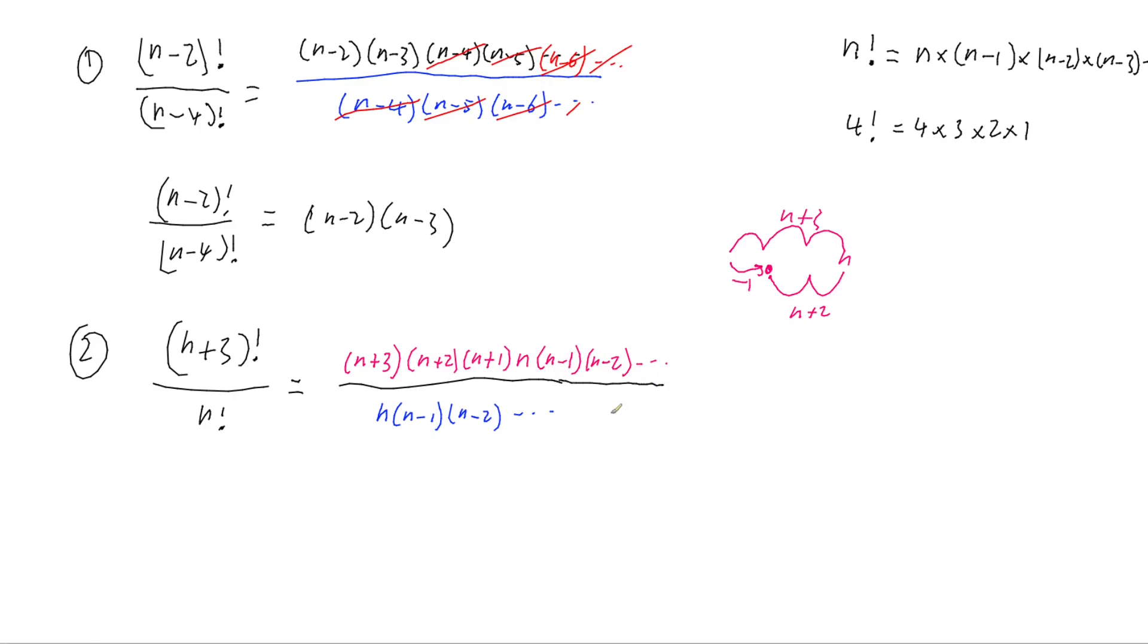We now have our expressions written out as much as we need. We can see that on my numerator, I'm starting with n that's going to cancel. Then the n-1 is going to cancel, then the n-2 is going to cancel, and everything else will cancel. That's going to leave us with the final answer of (n+3) times (n+2) times (n+1).